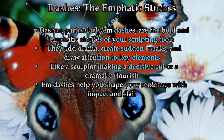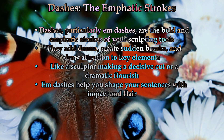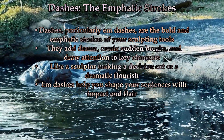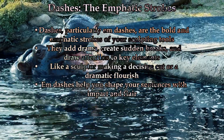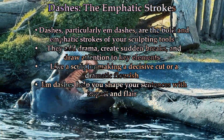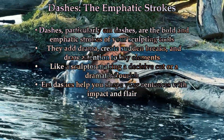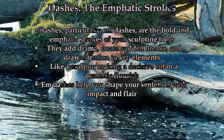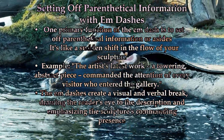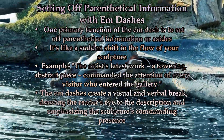Part 4: Dashes — The Emphatic Strokes. Dashes, particularly em-dashes, are the bold and emphatic strokes of your sculpting tools. They are the marks that add drama, create sudden breaks, and draw attention to key elements of your composition. Like a sculptor making a decisive cut or a dramatic flourish, em-dashes help you shape your sentences with impact and flair. One of the primary functions of the em-dash is to set off parenthetical information or asides, like a sudden shift in the flow of your sculpture.